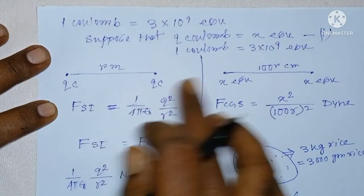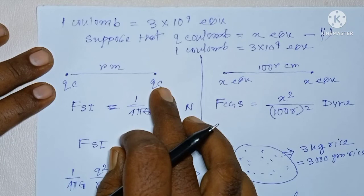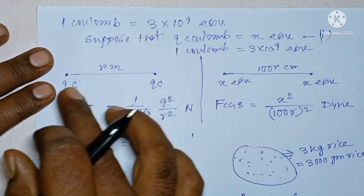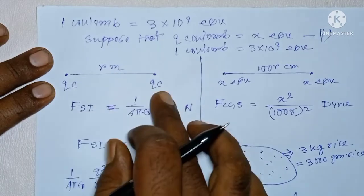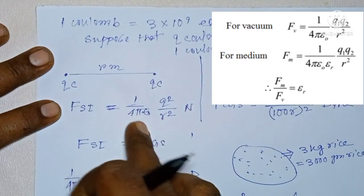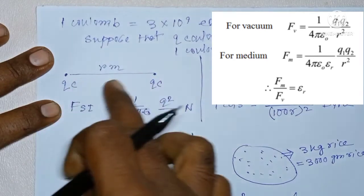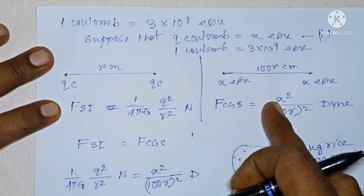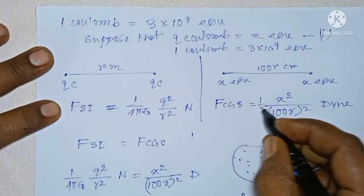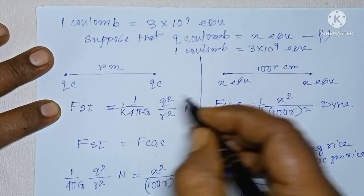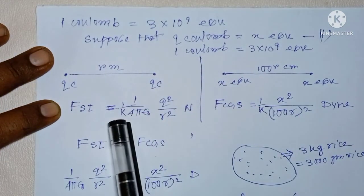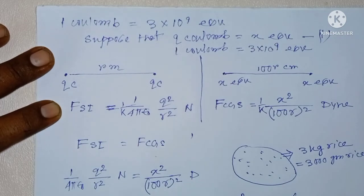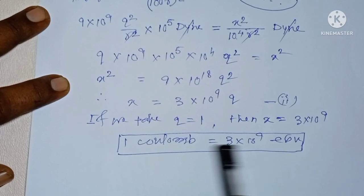This equality can also be proved if we put these two point charges in any other medium rather than vacuum. Suppose we have put these two point charges in water medium. The force will get reduced to 1 by k times where k is the dielectric constant of water. And also, in CGS unit system, the force will reduce to 1 by k times. So, the final result will be unaltered and we will reach to the same conclusion.